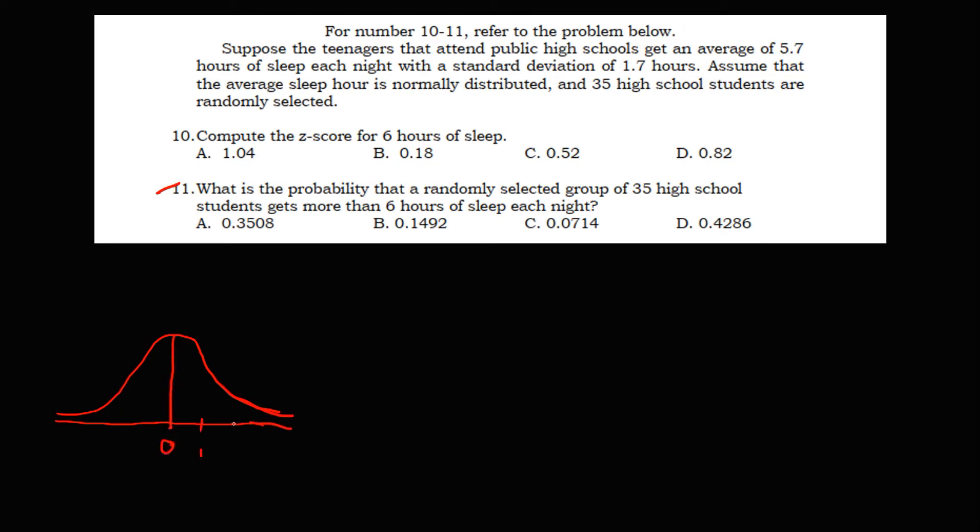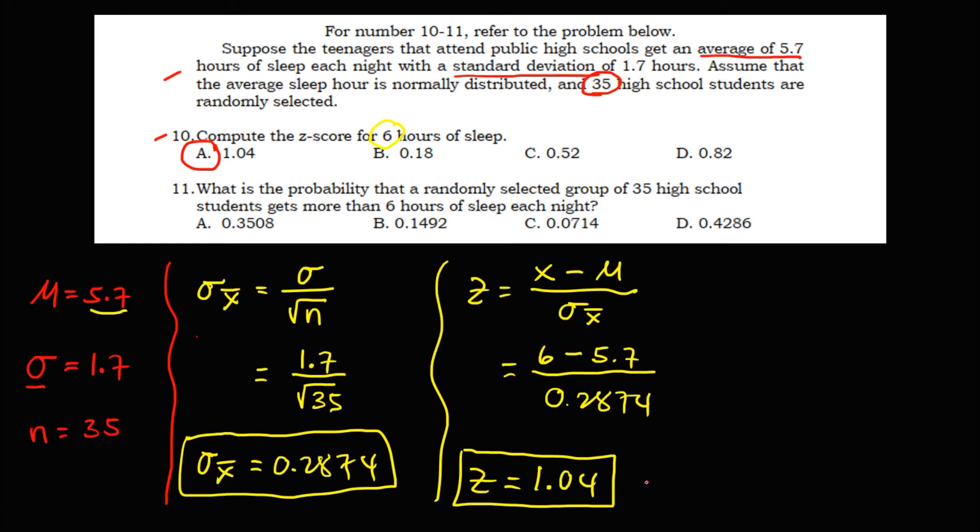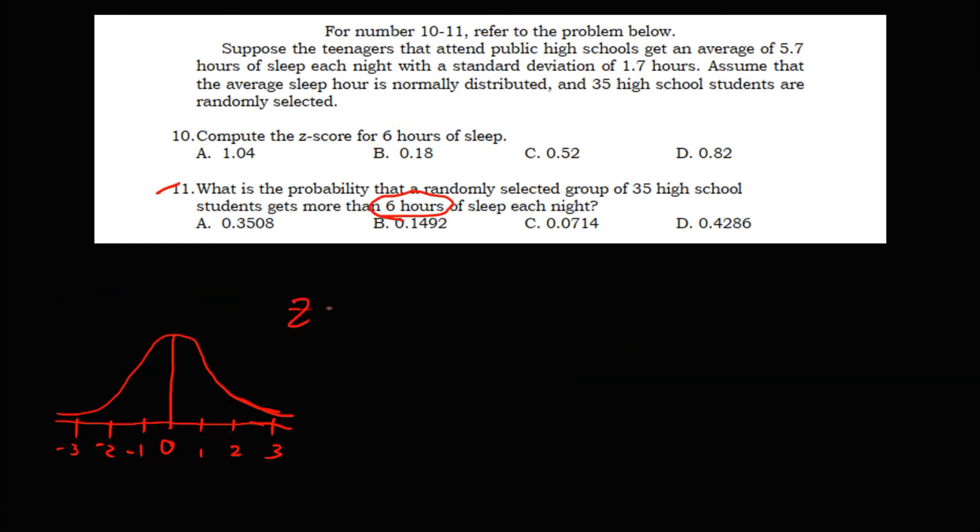Then positive 1, positive 2, and positive 3. This one is negative 1, negative 2, and negative 3. Then since the Z-score for 6 hours is 1.04, so in a normal curve, let's assume that this one is 1.04. Then since more than, therefore, we're looking for this area because this area is more than 1.04.